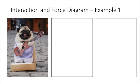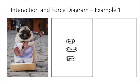Let's take a look at a very simple example involving an adorable little pug wearing a tiny outfit and holding a small guitar. For the sake of this activity, we're going to consider the pug, the guitar, and his outfit all as just one object called pug. I'll begin my interaction diagram by listing all of the objects in my scenario and circling them. So I have the pug, and the pug's also standing on the ground.